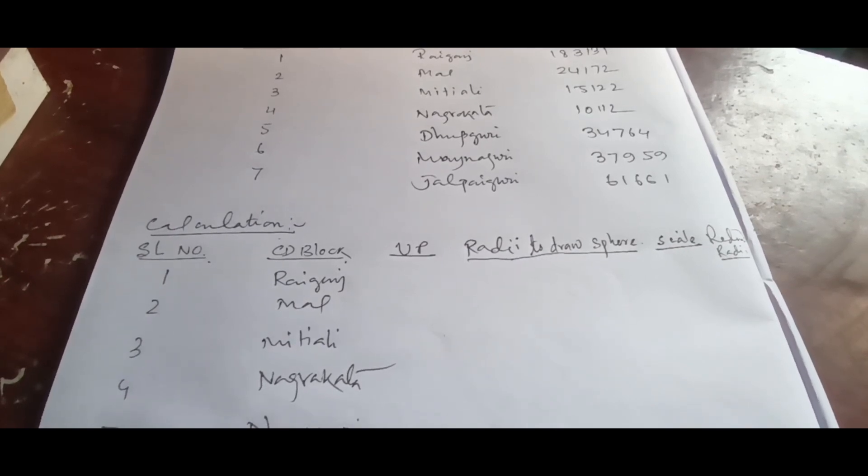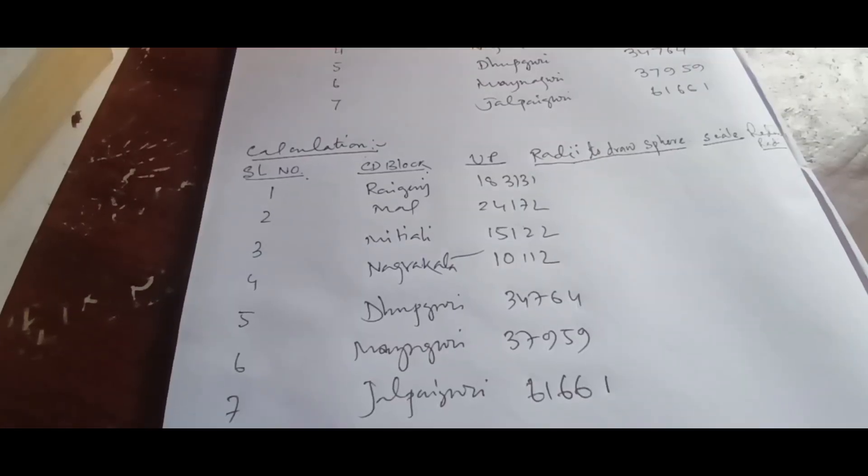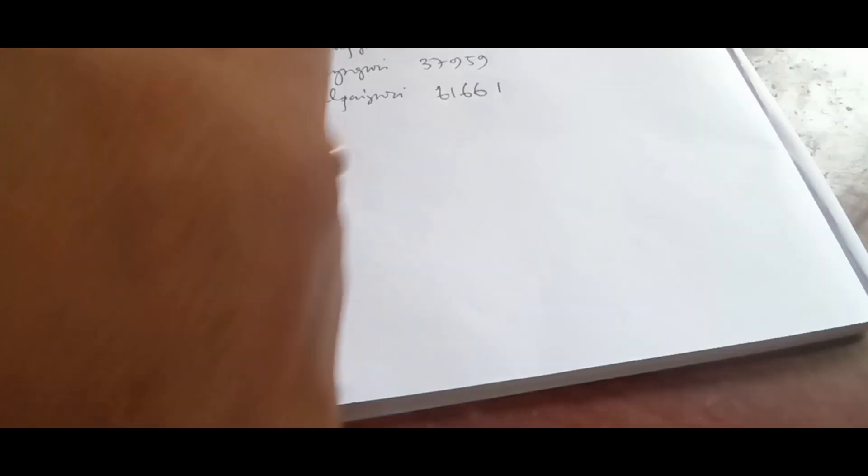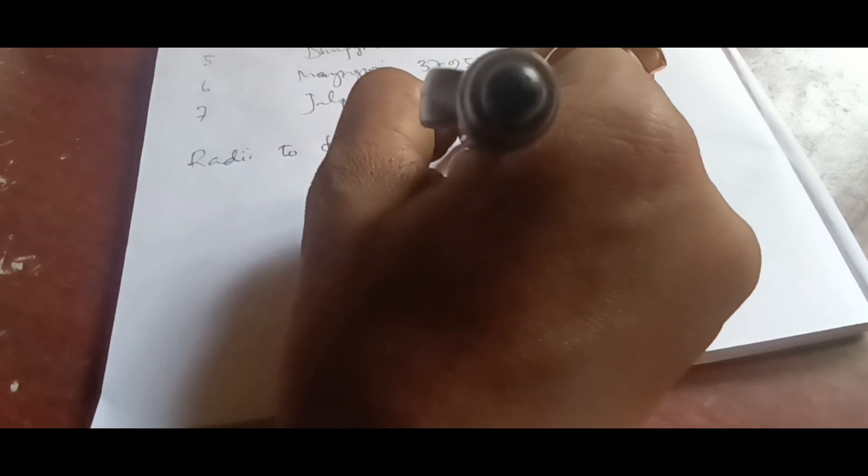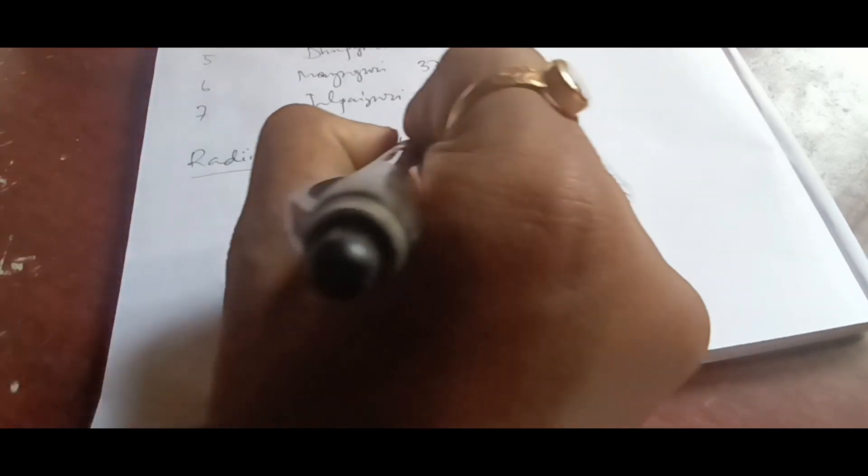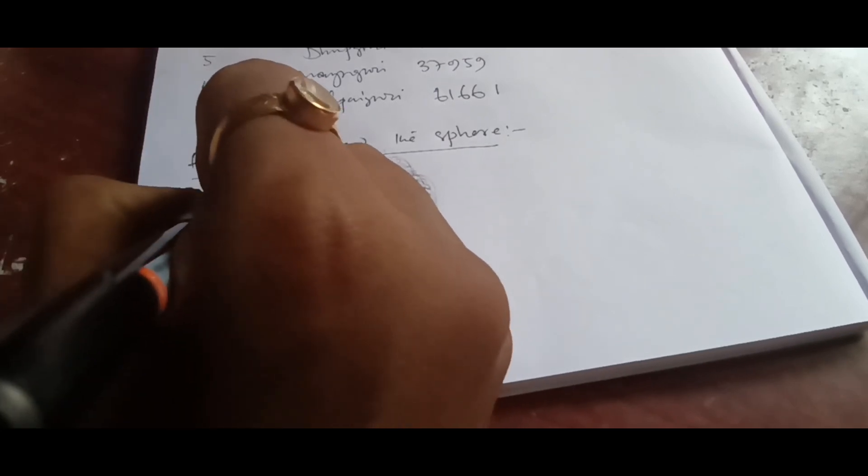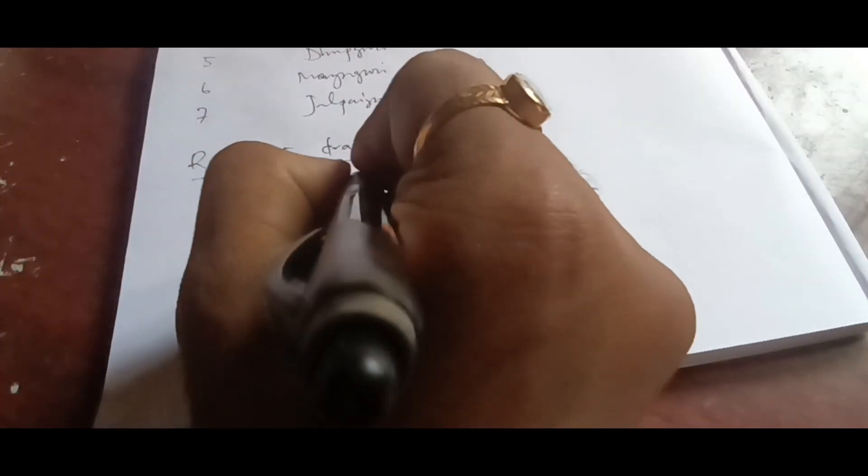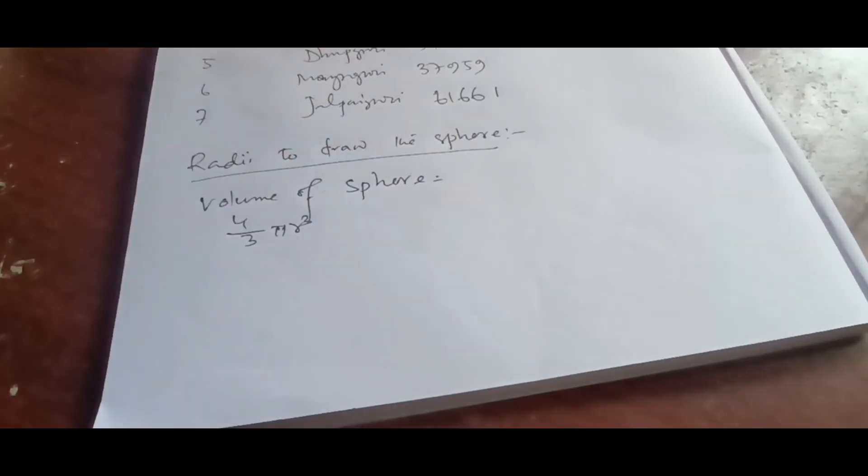I have written all the urban population. Now the fact is the radii to draw the sphere - there is a formula for it. Let us find out the formula. Radii to draw a sphere: we know that the volume of sphere is 4 by 3 pi r cubed. This is the formula.